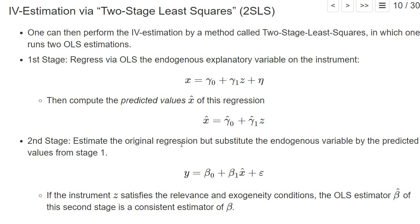In the second stage regression, we use the original regression but substitute the endogenous explanatory variable with the predicted values from stage one. So instead of X, we regress Y on x-hat. If the instrument satisfies the relevance and exogeneity conditions, then the OLS estimator from this second stage is actually the instrumental variable estimator — and it's a consistent estimator of beta-zero and beta-one.